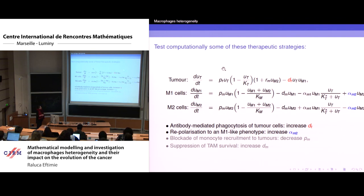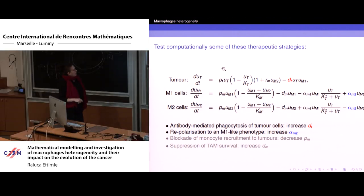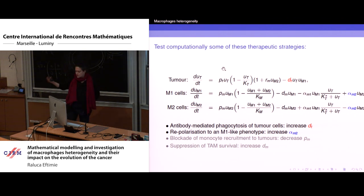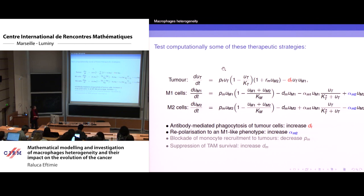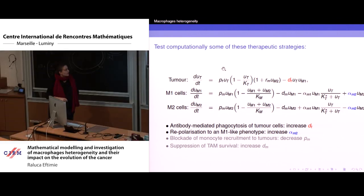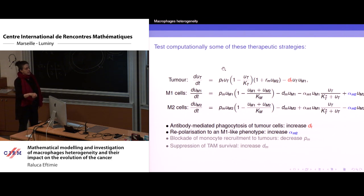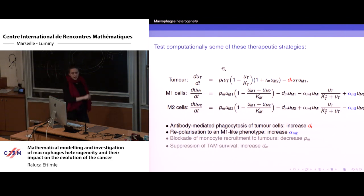Antibody-mediated phagocytosis of tumor cells maps to increasing parameter D_T. Repolarizing towards M1 macrophages maps to increasing alpha_M2 — this can only be done through external interventions. Blockade of monocyte recruitment corresponds to decreasing the proliferation rate. Suppression of survival corresponds to decreasing D_M. For this presentation, I'll focus exclusively on D_T and alpha_M2.